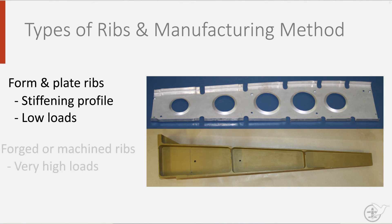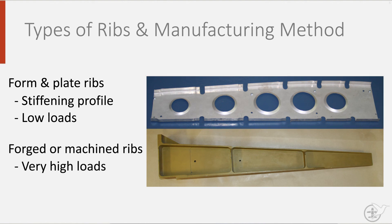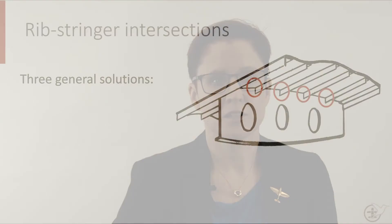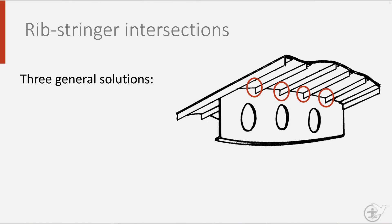Highly loaded ribs in contrast may be forged and machined to ensure they can withstand their design loads. As with fuselages, wing skin panels are also stiffened using stringers. As a result, rib-stringer intersections are unavoidable.